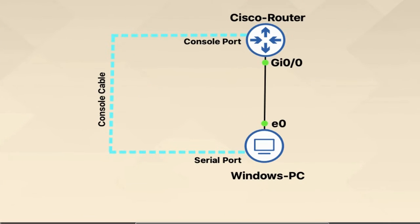Now let's move to our logical topology. The logical topology works the same as the physical topology. To take a backup of the router, connect the PC to the router with a console cable and open a terminal to access the router console. We also connect an ethernet cable from router gig 0/0 interface to the PC.